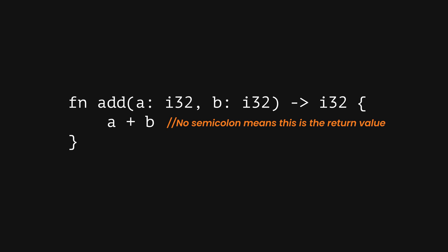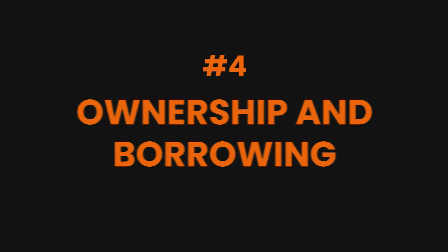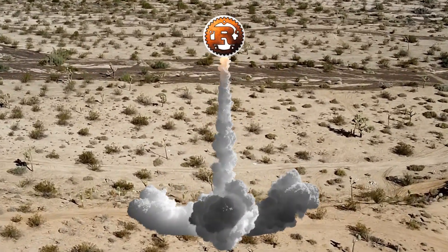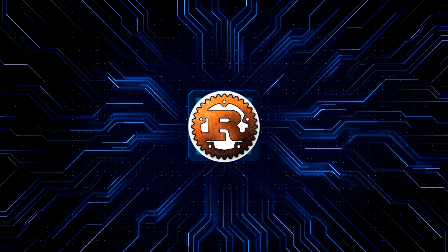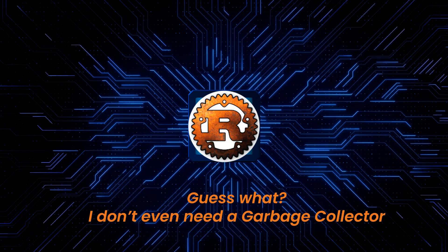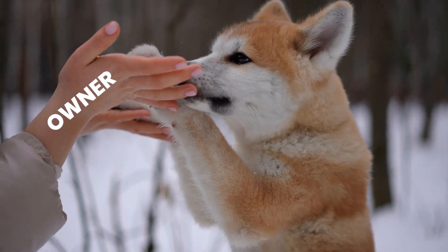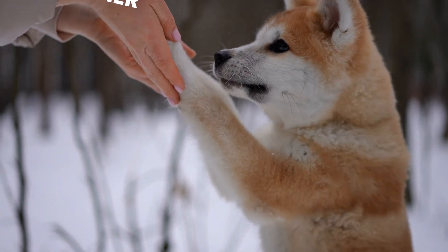Now it's time for the big leagues: ownership and borrowing. This is the part where Rust really stands out from other languages. Ownership is Rust's way of managing memory safely without a garbage collector, but it can feel a bit strict at first. In Rust, every value has an owner.